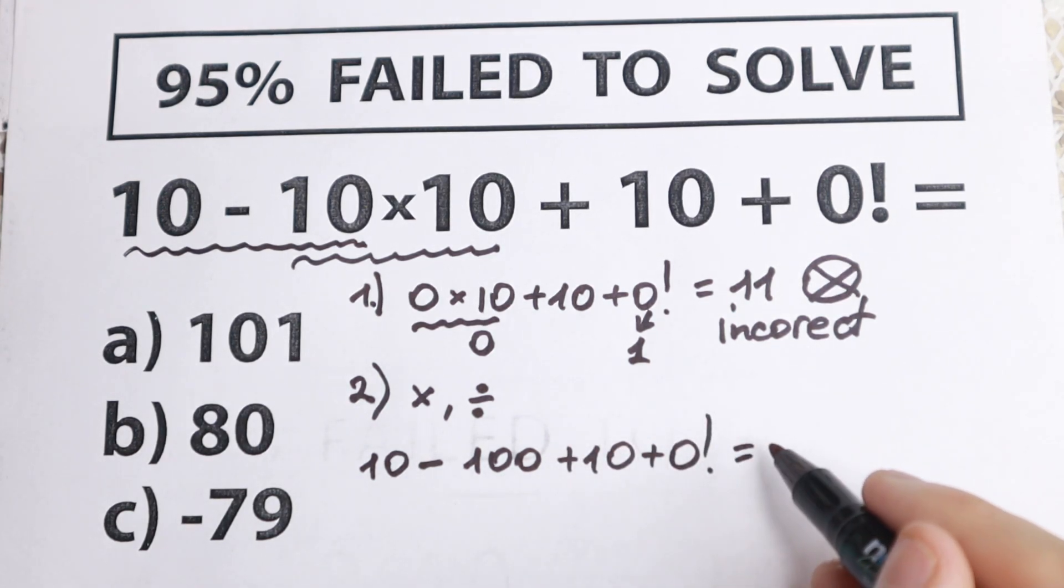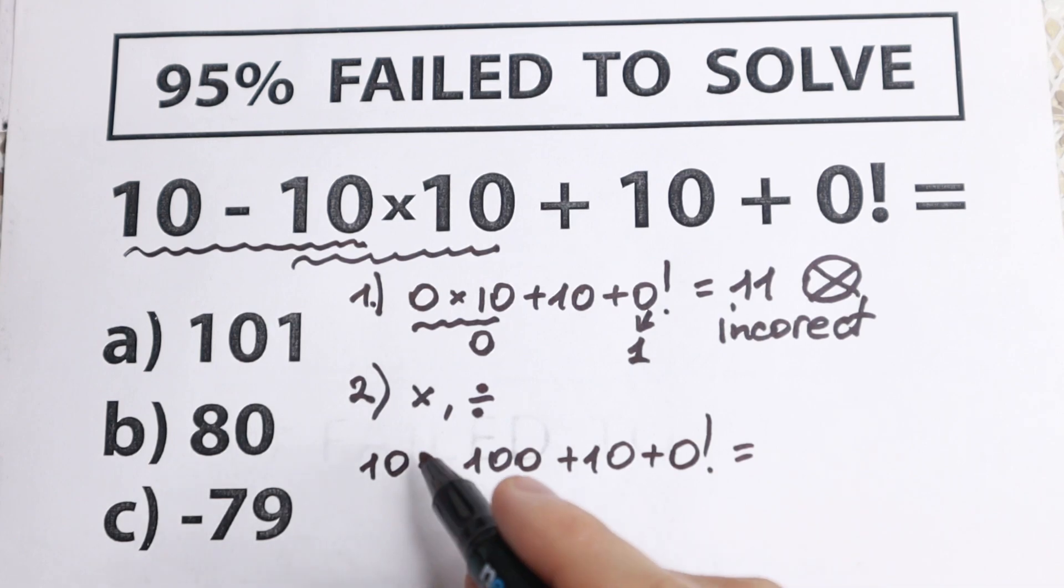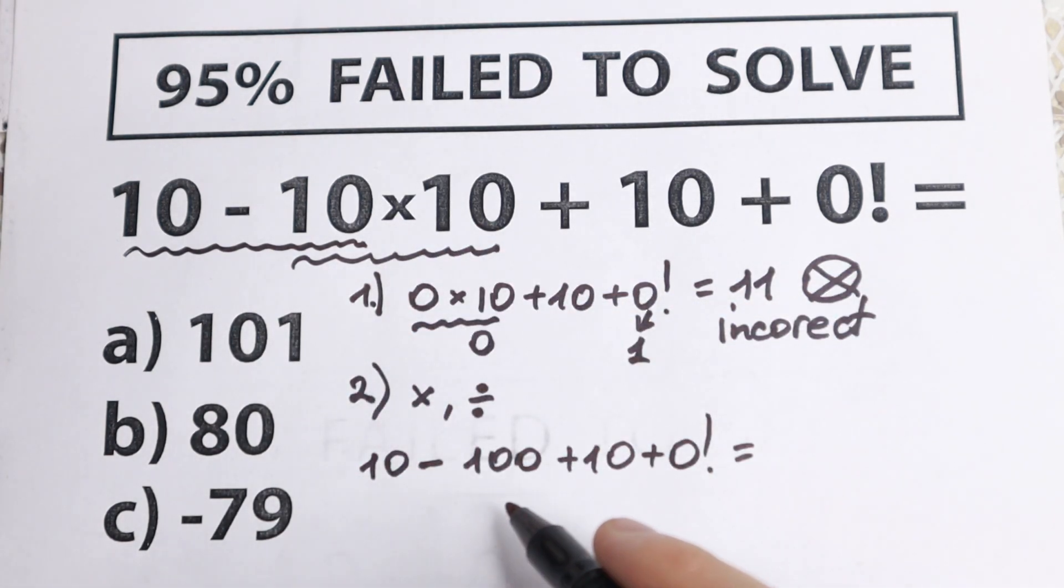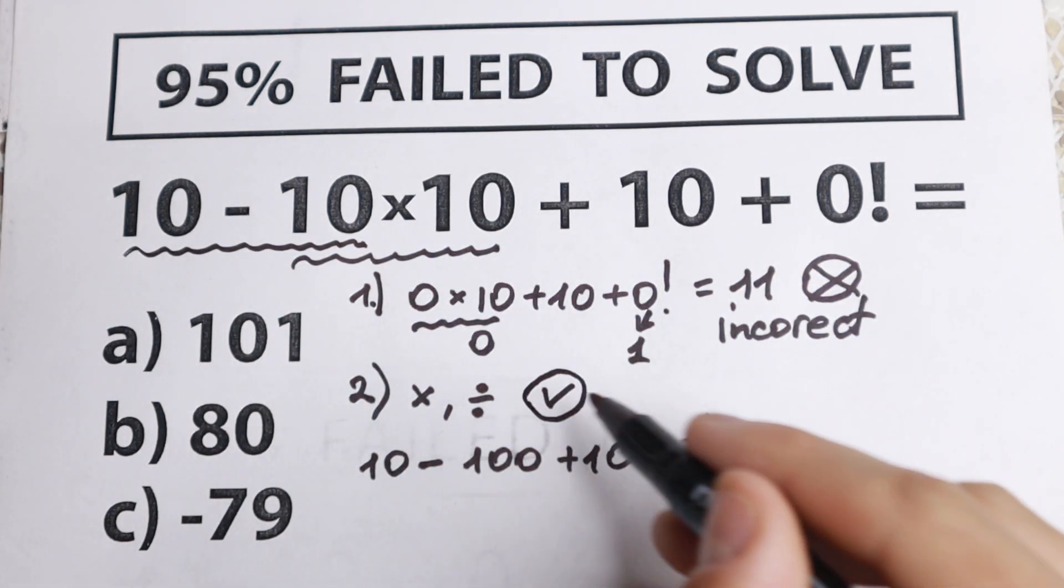We have this expression. This expression is absolutely correct because we start with multiplication or division. In our case, we have multiplication. So this method is absolutely correct.